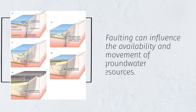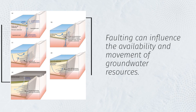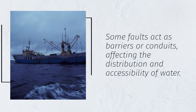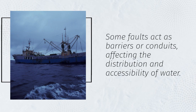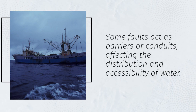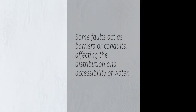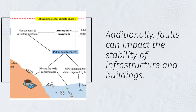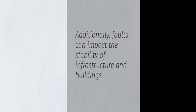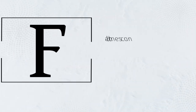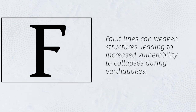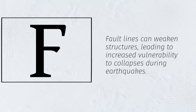Faulting can influence the availability and movement of groundwater resources. Some faults act as barriers or conduits, affecting the distribution and accessibility of water. Additionally, faults can impact the stability of infrastructure and buildings. Fault lines can weaken structures, leading to increased vulnerability to collapses during earthquakes.